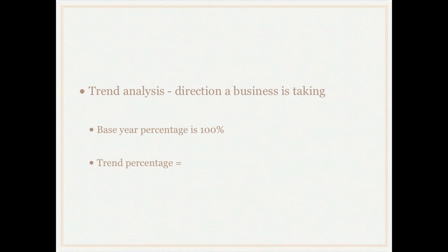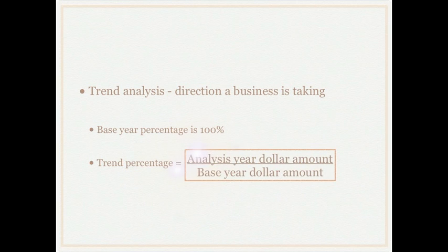The trend percentage is calculated by taking the analysis year dollar amount — so whatever the revenue is for the current year, for example — and dividing that by the revenue for the base year. That gives us our trend percentage.